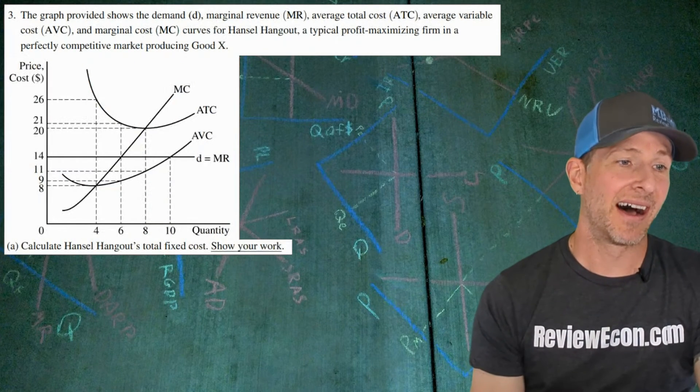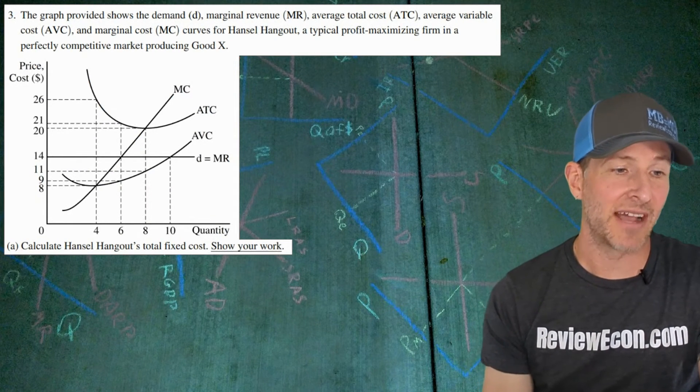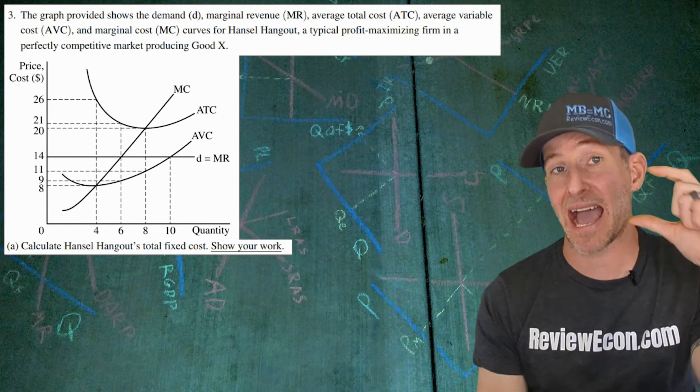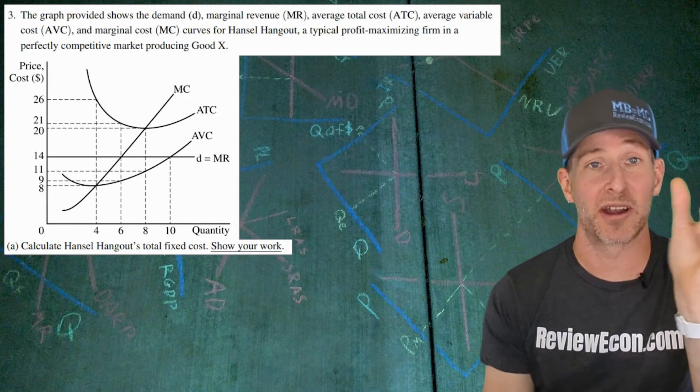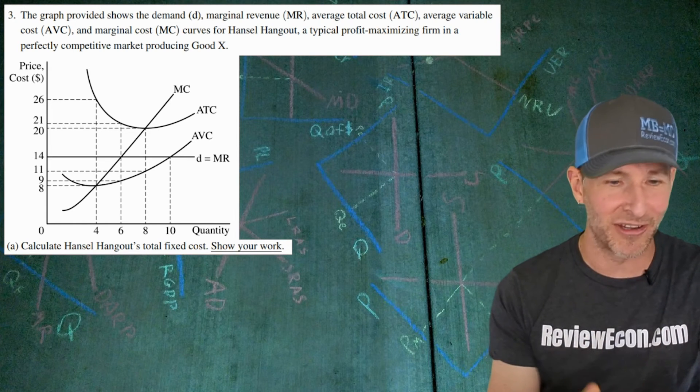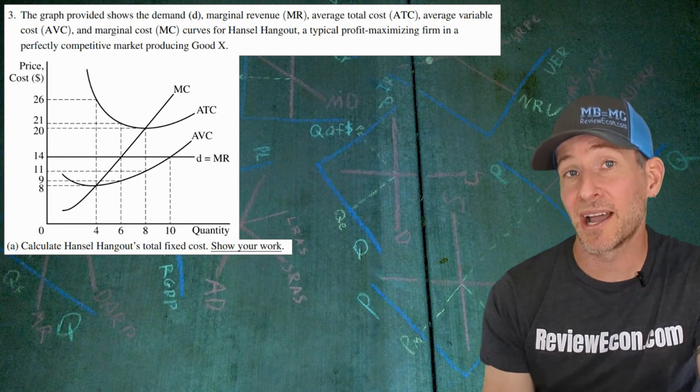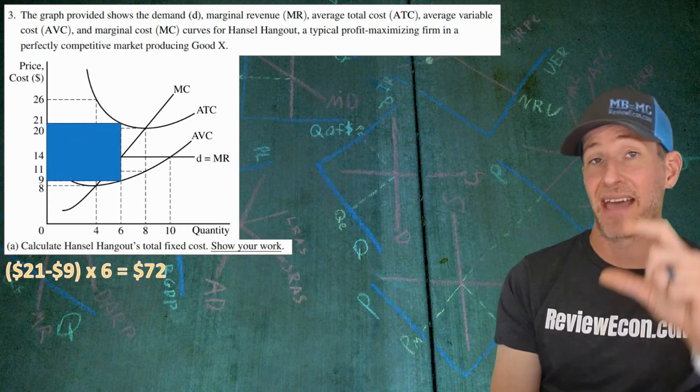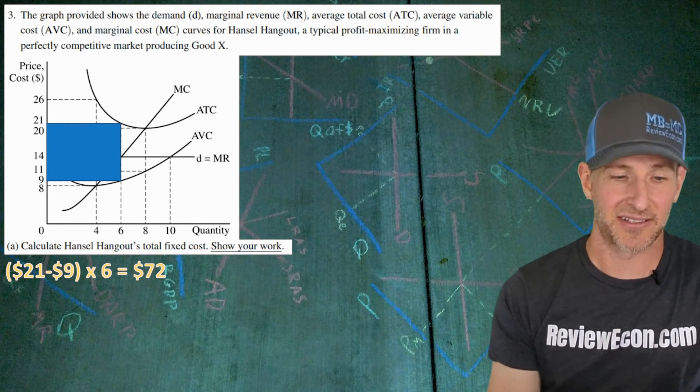Now we've got a graph we're going to analyze. This is a perfectly competitive firm graph. We have all the expected curves here. First thing we have to do is calculate Hansel Hangout's total fixed cost. Remember the total fixed cost is the gap between the average total cost and average variable cost, that's your average fixed cost, times the quantity you are currently at. Any point where you can find the gap between average total cost and average variable cost, multiply it by the quantity. In this case, I picked the profit maximizing quantity of 6. The gap, $21 minus $9, gives us $72 of total fixed cost.